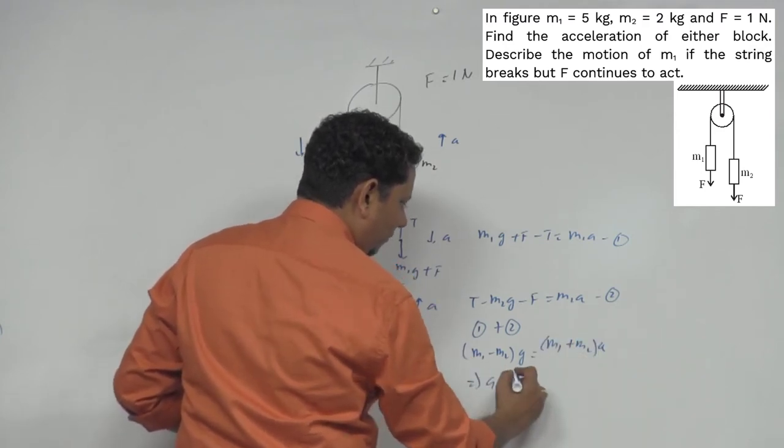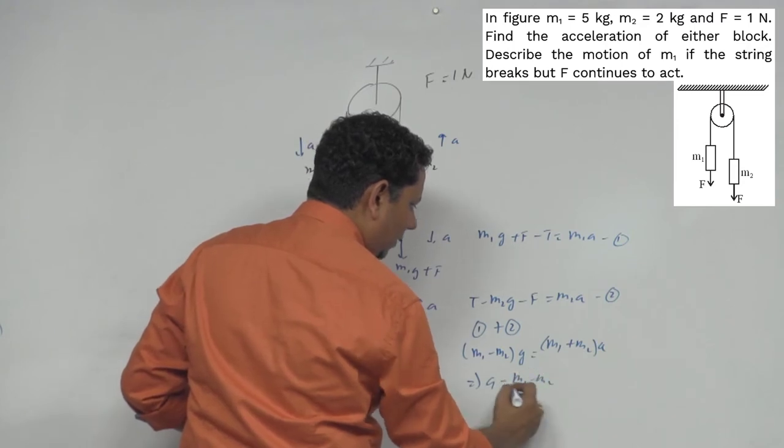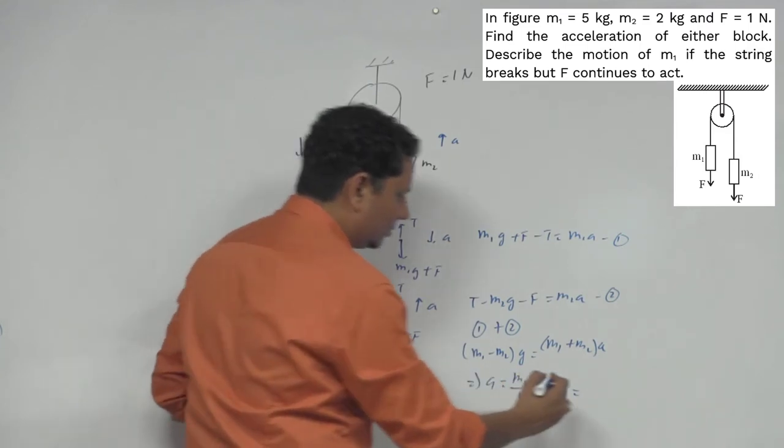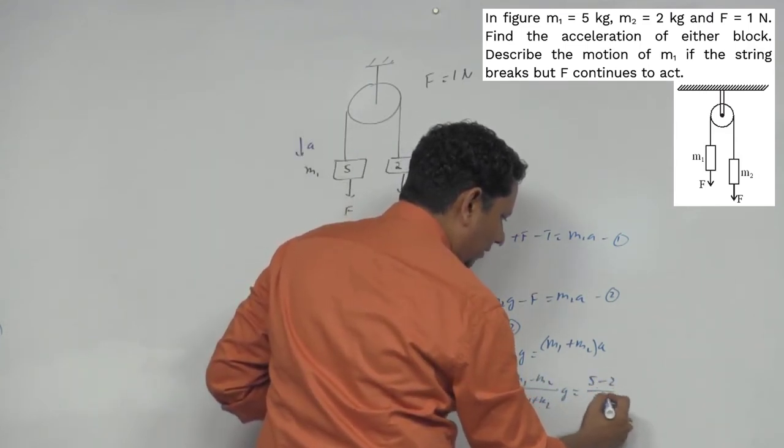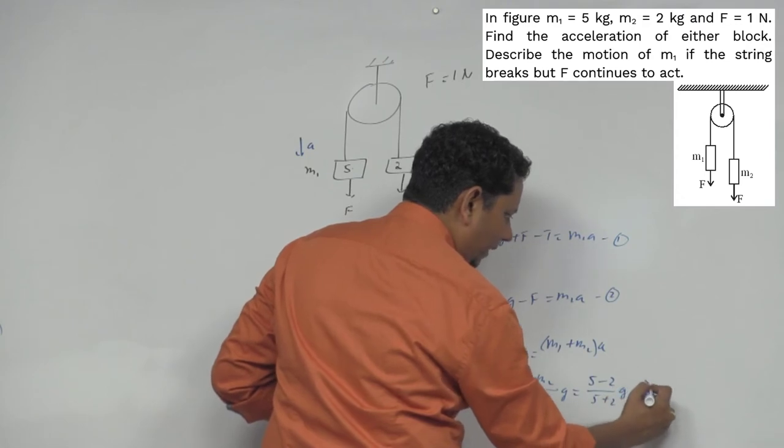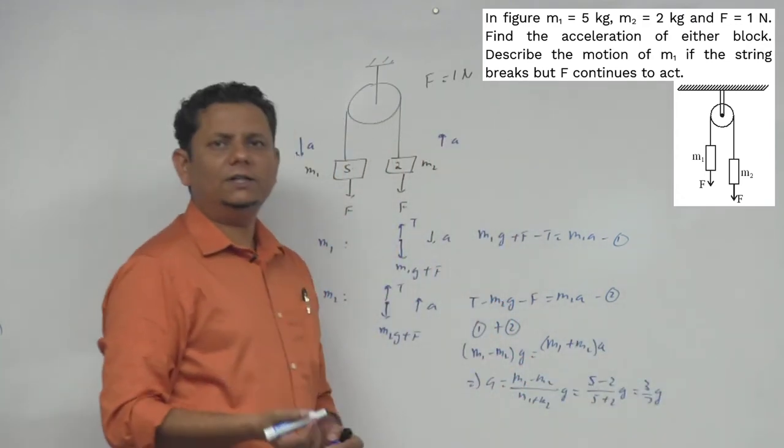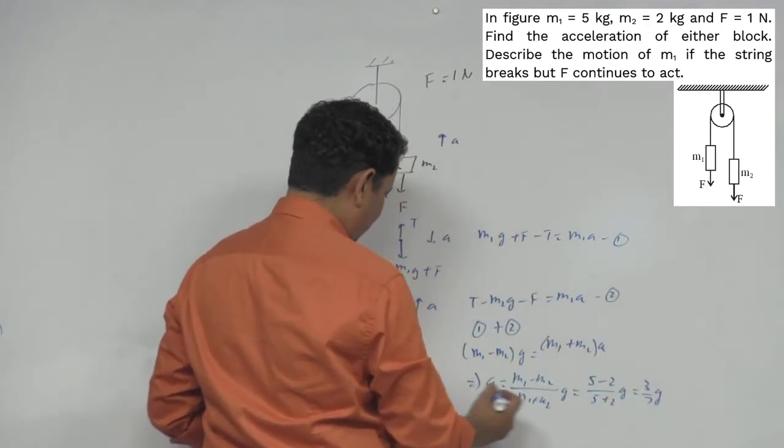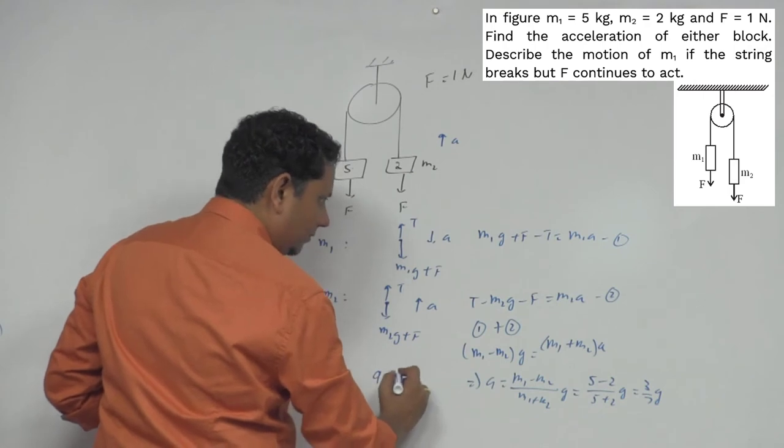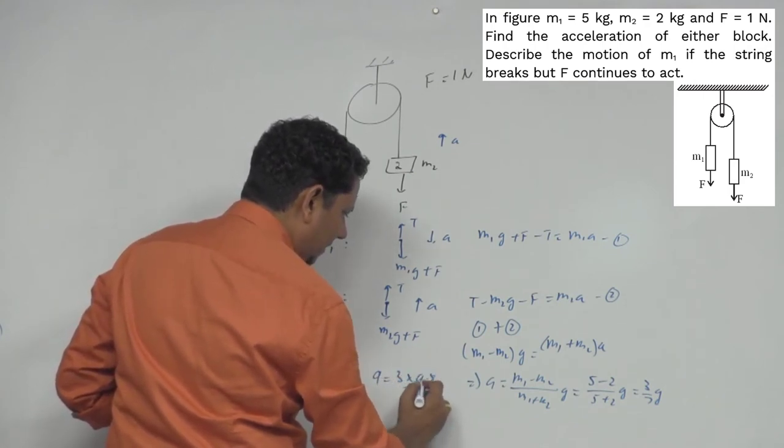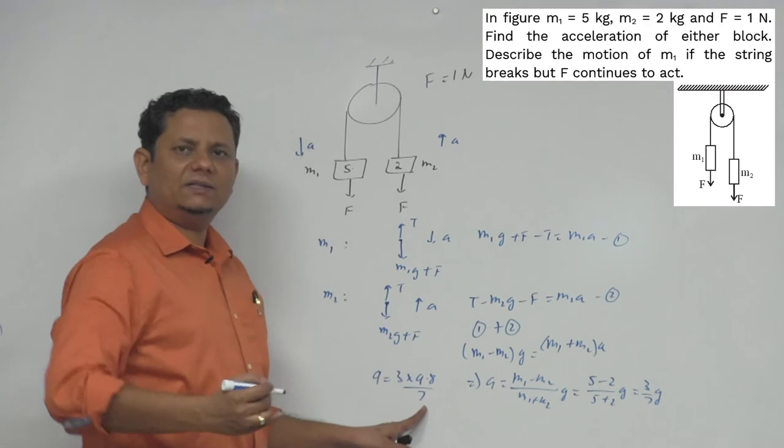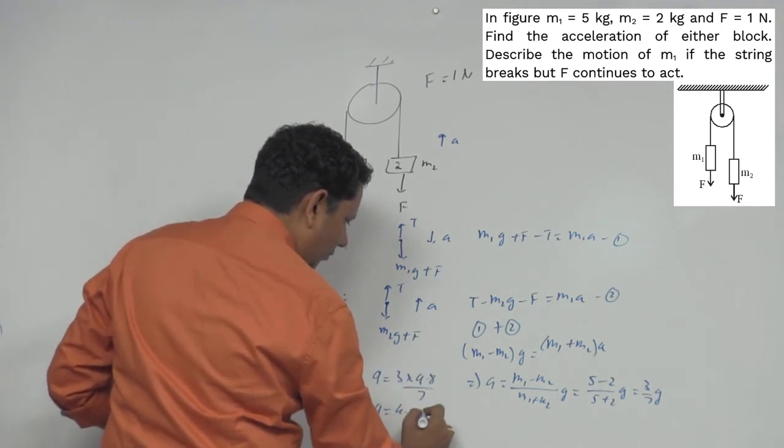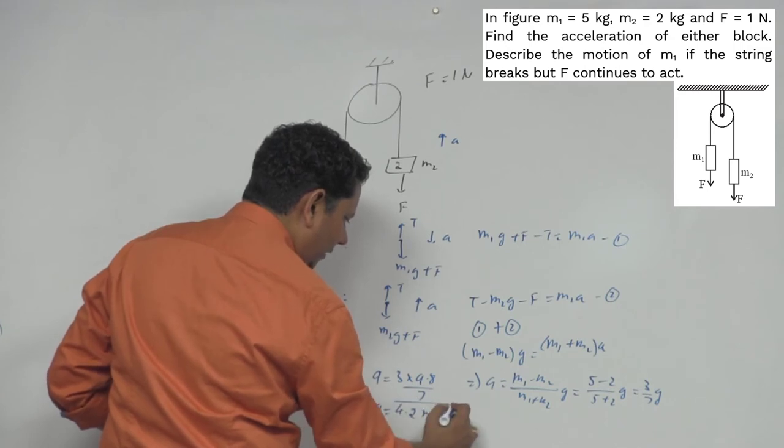So the value of a that we got is m1 minus m2 divided by m1 plus m2 times g. Putting the values 5 and 2, this will be equal to 5 minus 2 divided by 5 plus 2 times g, that is 3 by 7 g. Now putting g value here as 9.8, acceleration will be equal to 3 multiplied by 9.8 divided by 7. This gives 1.4 into 3, so acceleration is 4.2 meter per second square. So this is your first part.